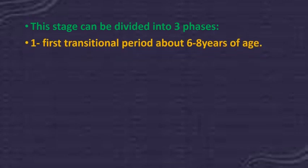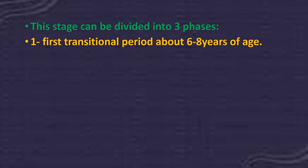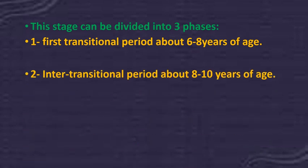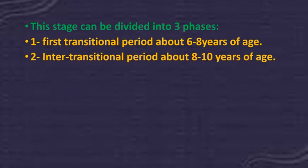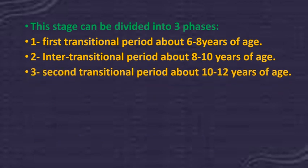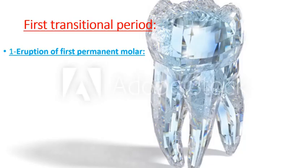The mixed dentition stage can be divided into three phases. The first transitional period occurs between age 6 to 8 years. The intertransitional period occurs at about 8.5 to 10 years of age, and the second transitional period occurs at about 10 to 12 years of age. The first transitional period is associated with the eruption of the first permanent molar and the central and lateral incisors.